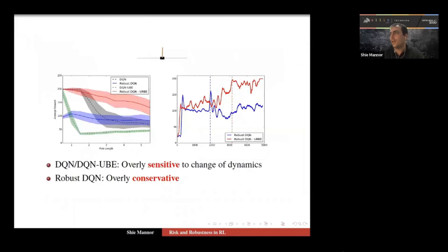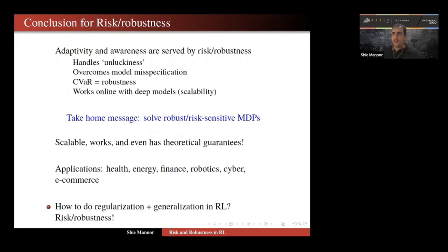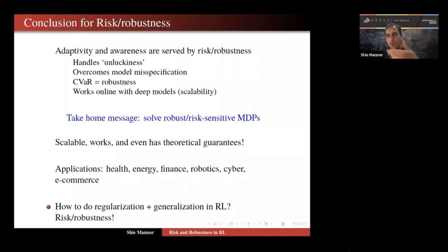Take-home messages: you should solve robust and risk-sensitive MDPs — they are just a better way to handle uncertainty, they're scalable, they work, and they have lots of applications. The big open question is how to formulate regularization and generalization in reinforcement learning in general. I've worked on this for many years and I feel I'm about to solve it — risk and robustness is the solution to make our algorithms generalize, and the form of risk and robustness may be different than what we initially thought, but this is what makes algorithms work. Being able to be robust is another facet of regularization and generalization.